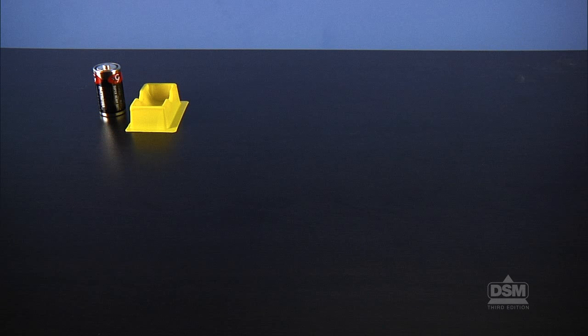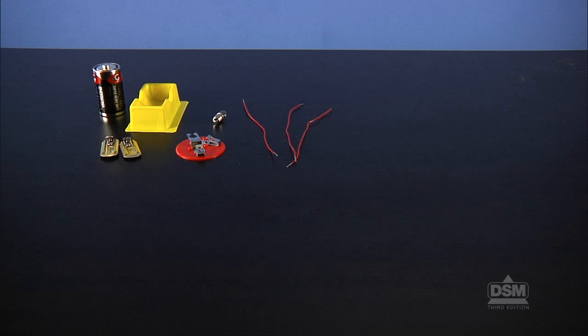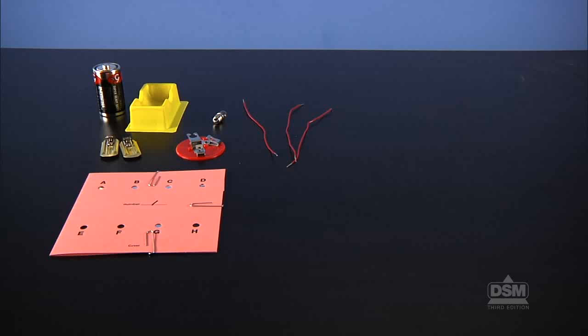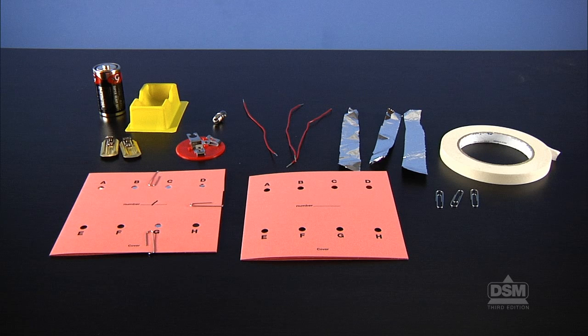Each team of two will need one battery, one battery holder, two electrical clips, one bulb, one bulb holder, three pieces of insulated copper wire, one prepared circuit puzzle, a blank circuit folder, several strips of aluminum foil, three paper clips, and access to the roll of masking tape.